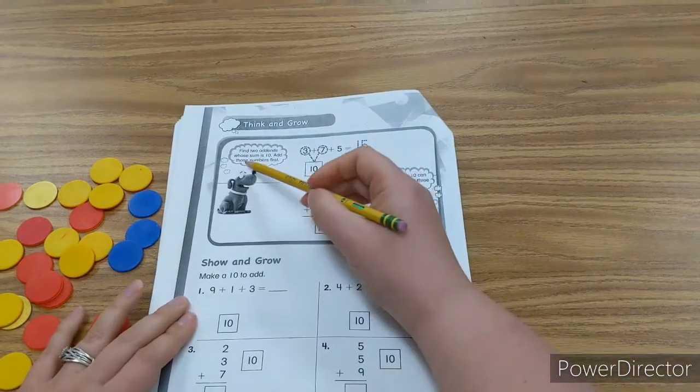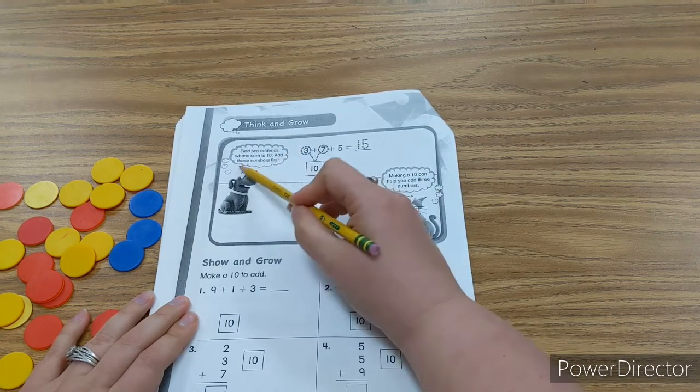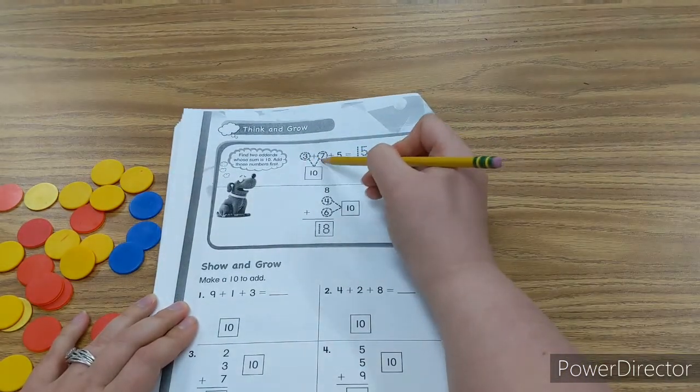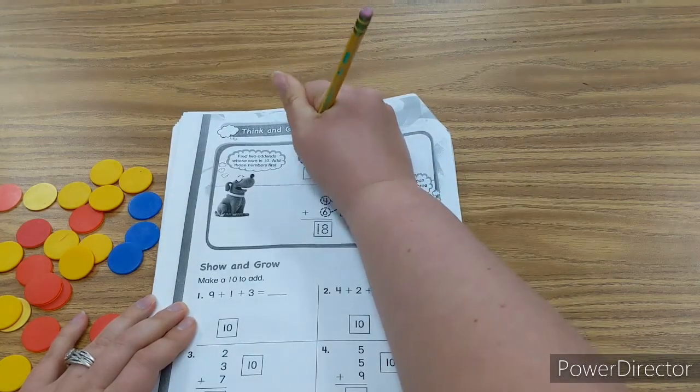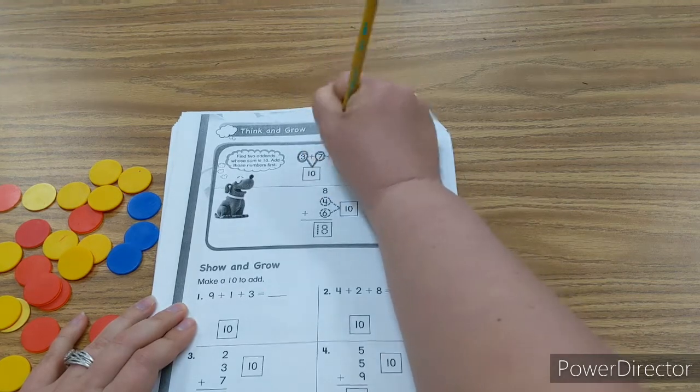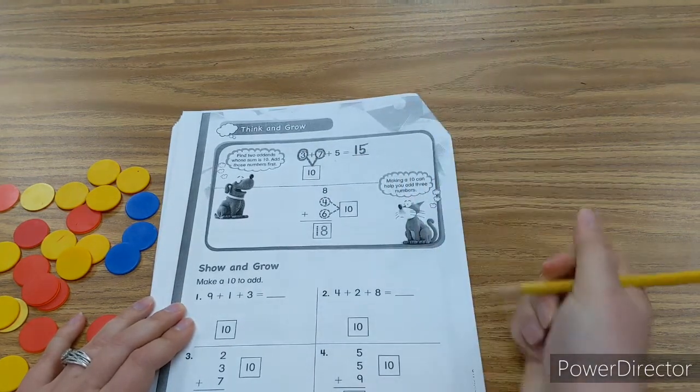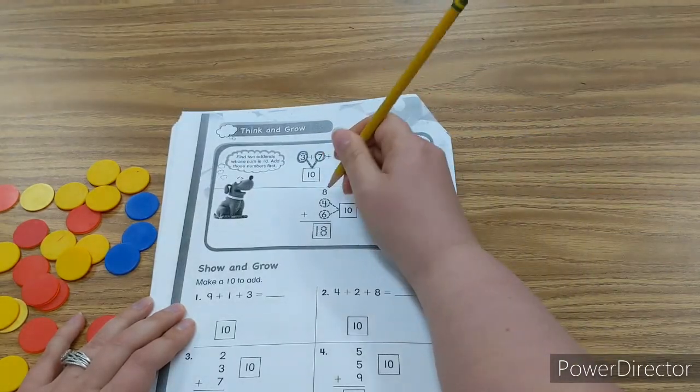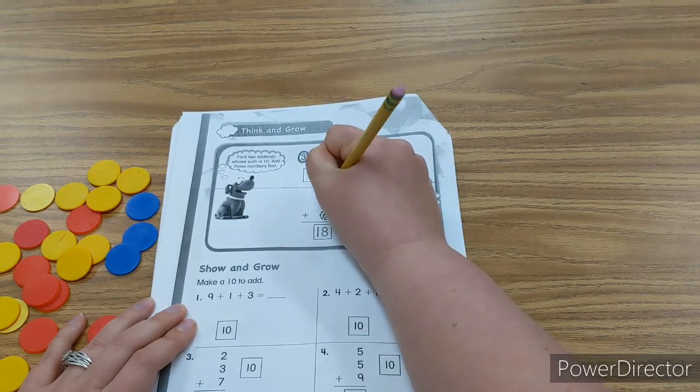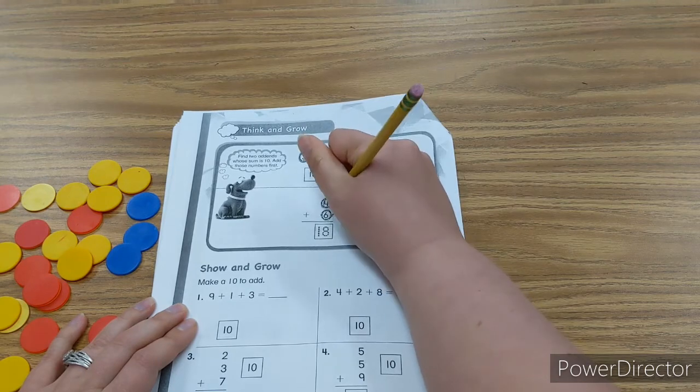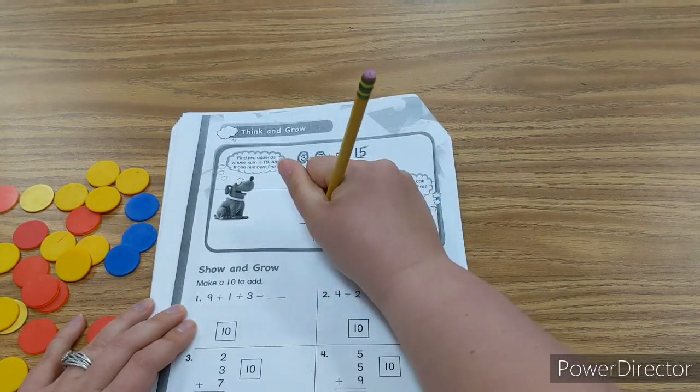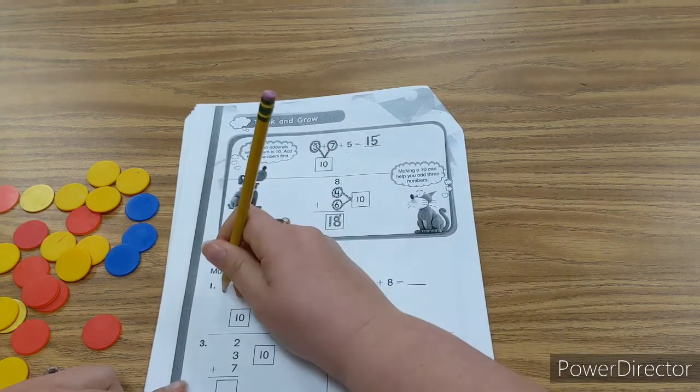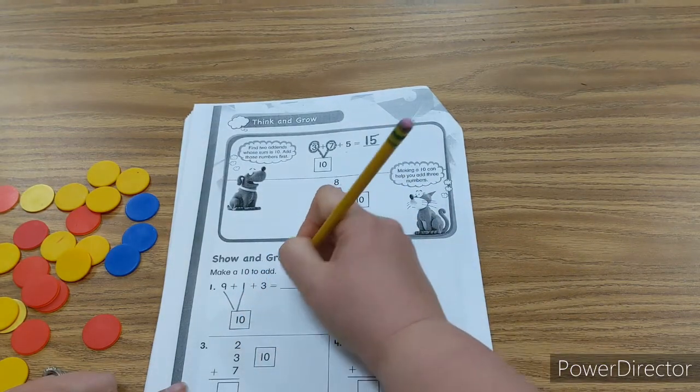Think and grow. Find two addends whose sum is 10. Add those numbers first. So we have to know the ones that make 10. If I look at my equation, I have 3 plus 7 plus 5. Well, I know 3 and 7 equals 10. 10 and 5, 15. Now if I look, making 10 can help you add 3 numbers. It helps you add it a lot quicker. So 8 plus 4 plus 6. Well, I know 4 and 6 is one way I can make 10. And 10 plus 8 is 18. Now if we look at number 1, I know 9 and 1 more makes 10. And 10 plus 3 equals 13.